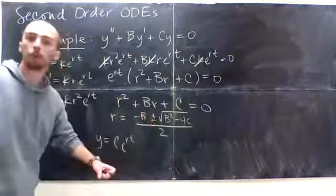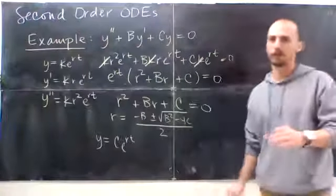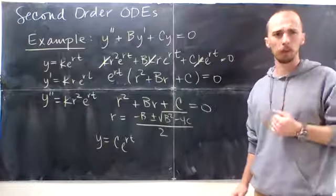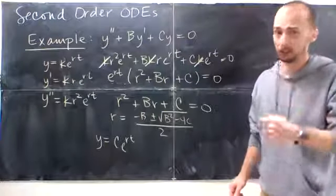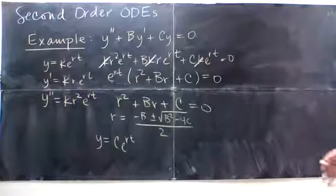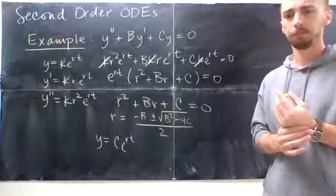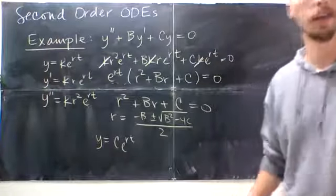So my solution is going to be y equals c e to the rt. And there's 2 of them. Now, in this video, I'm going to be interested in whether there are 2 of them. They are both real and they are different. We can look at a repeated root later. And we will definitely be looking at complex roots in the next video.